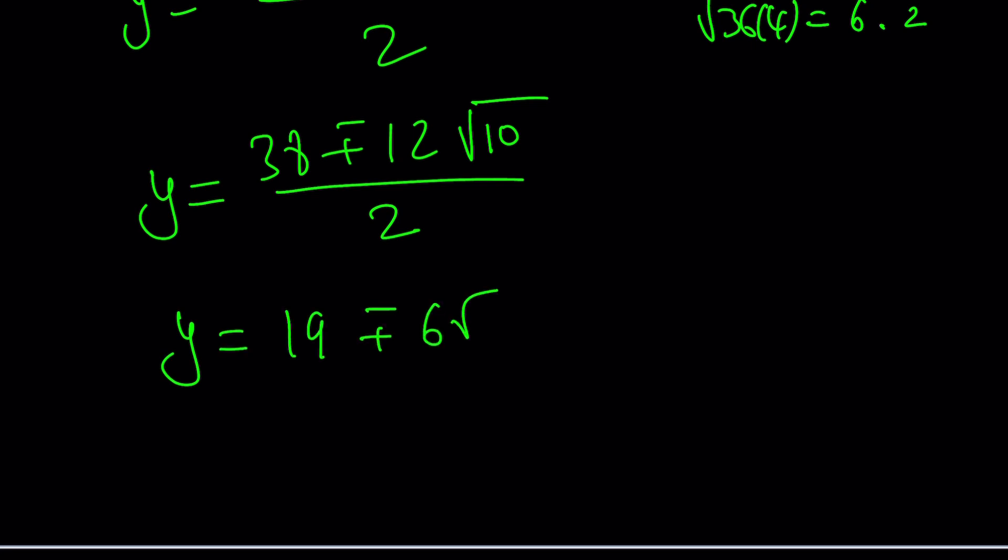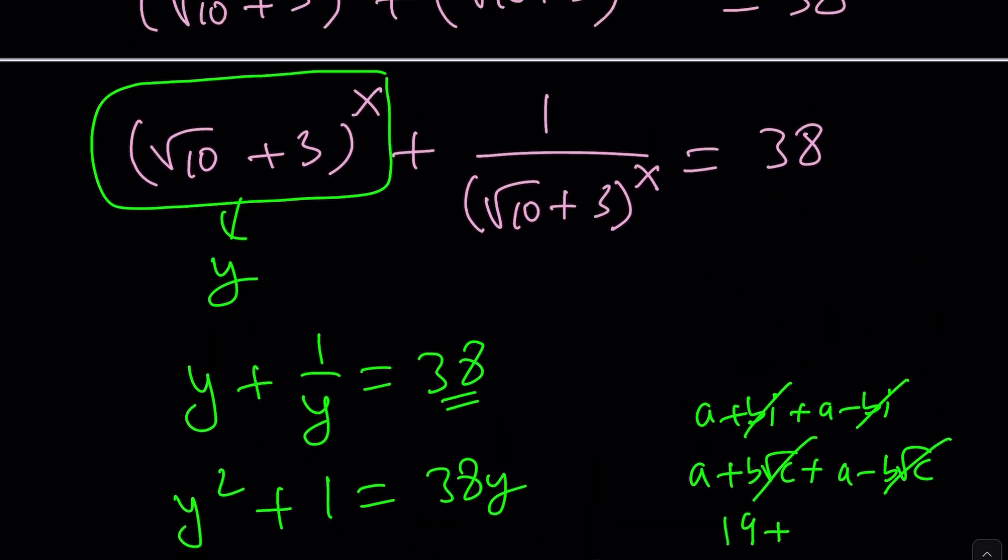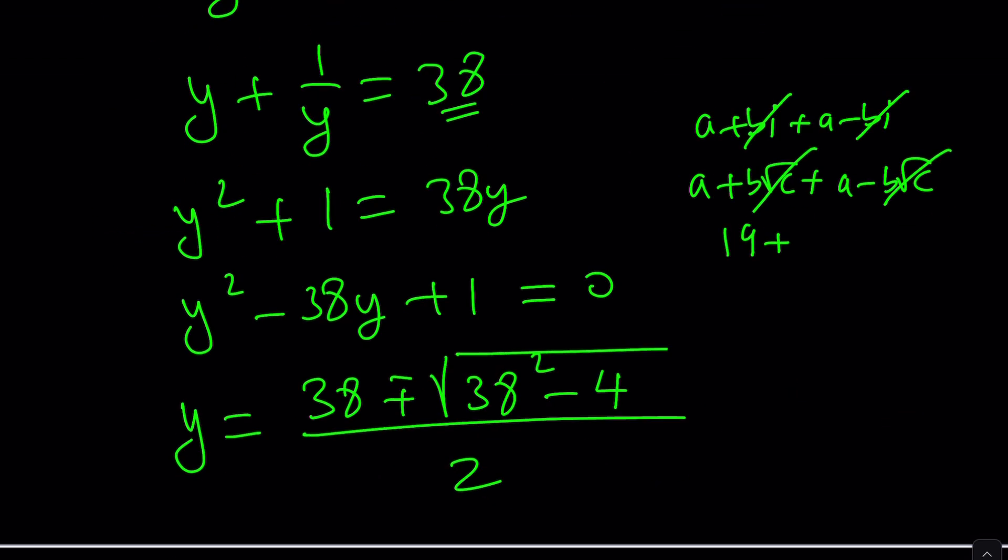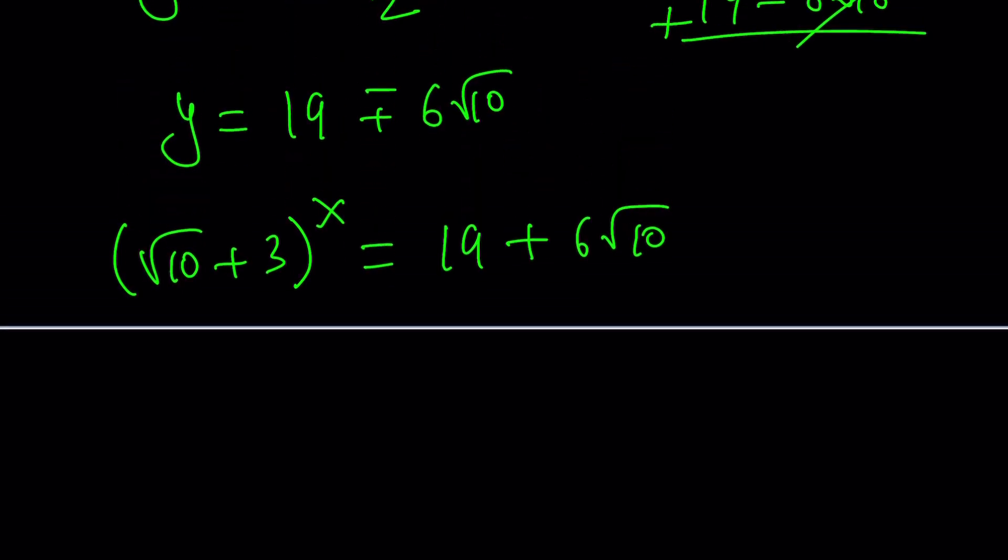Now divide everything by 2, you're going to get 19 plus minus 6 root 10. Didn't I tell you? The rational part is going to have a 19 in it because you have to add them. Think about it. Take these two expressions, add them, you're going to get 38. Make sense? Because we add them and we get 38, but they are something to the power x. So how do we go from here to x? Let's go ahead and take a look. So I'll take square root of 10 plus 3 to the power x, and I want it to be 19 plus minus 6 root 10. Now here's a million dollar question. Can I take a radical with a plus sign and get something with a minus sign? No way, right? So the signs need to match. So I'm going to go with the plus sign on both.